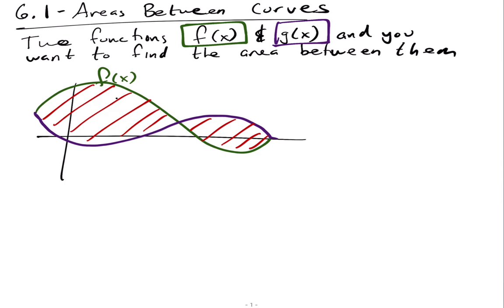So that's what we're looking for. Let's say this is a and this is b. What's a good strategy for finding the area between the curves? What's our only tool for finding areas at this point? Integration — and what does integration give us? It gives us the area underneath the curve, meaning between the curve and the x-axis — the signed area.